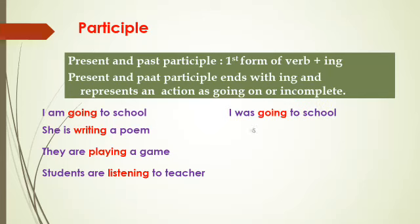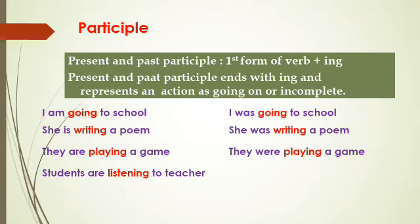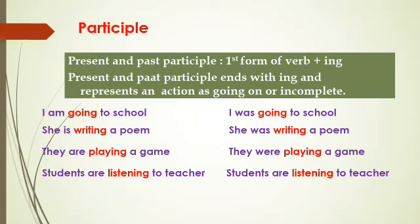'I was going to school.' 'She was writing a poem.' 'They were playing cricket.' 'Students are listening to teacher.' In all these examples, the ing forms — going, writing, playing, listening — never change. Was, were, are — those change and are finite. But the ing forms do not change when subject or tense changes. They are called non-finites, specifically participles.